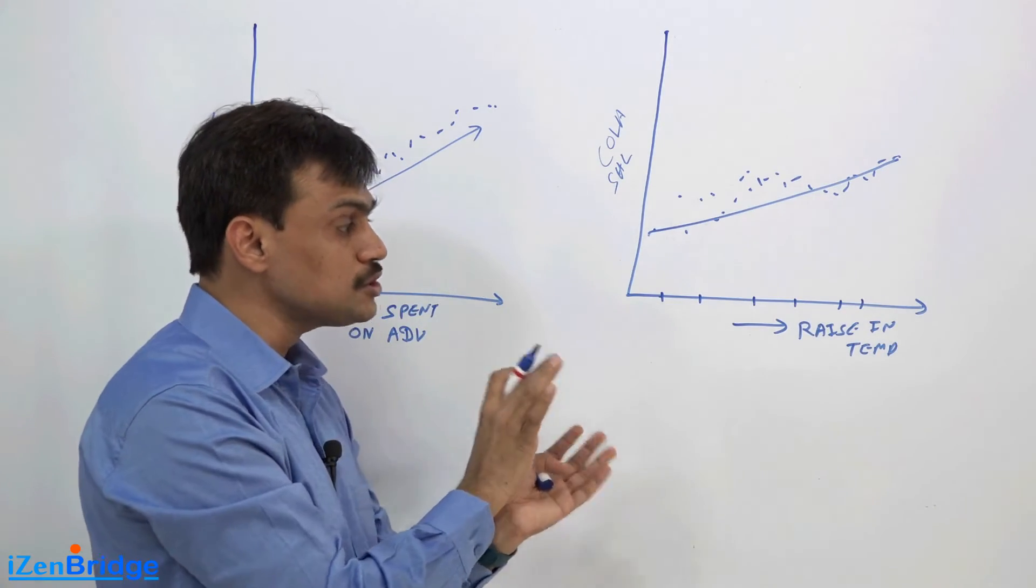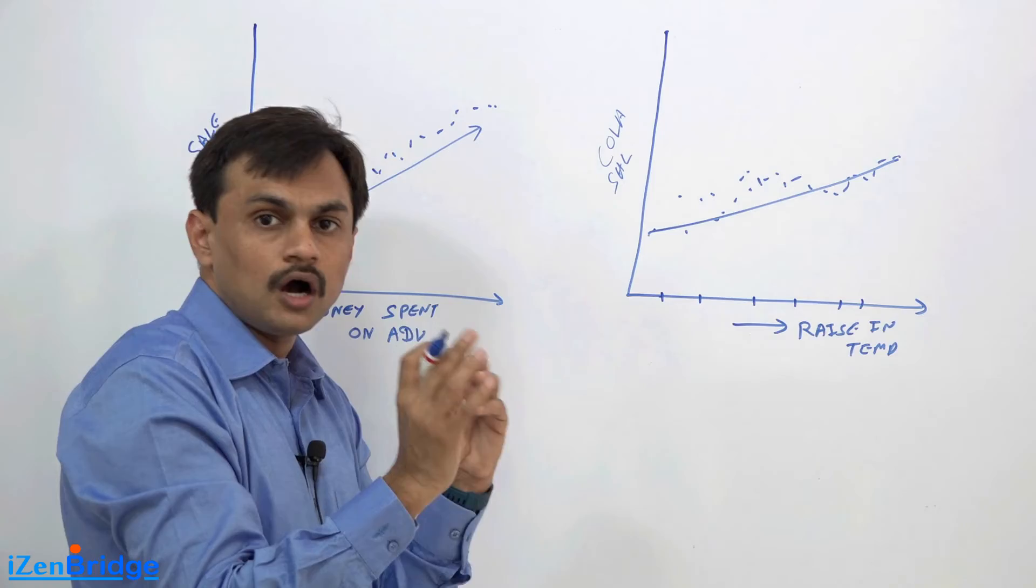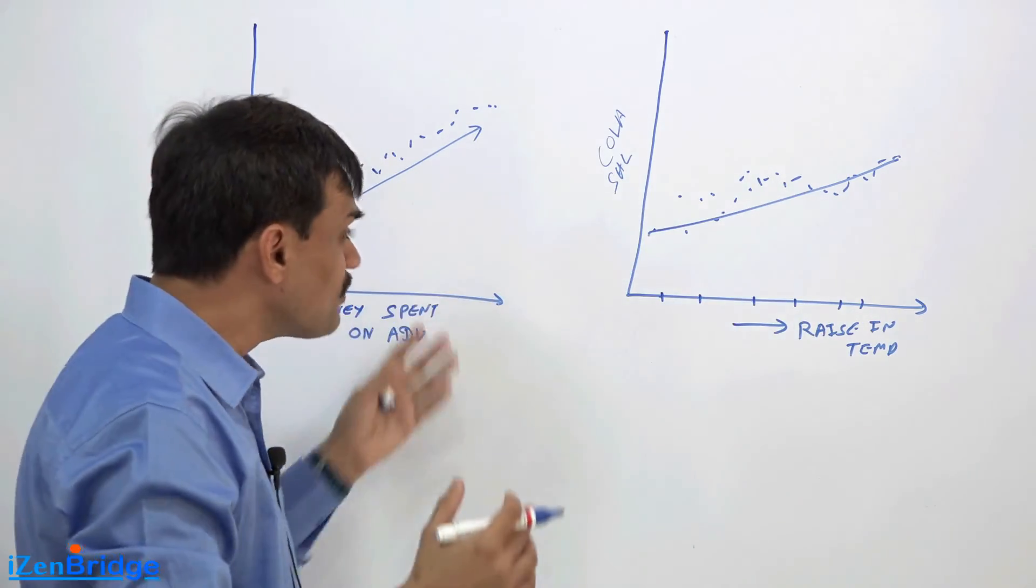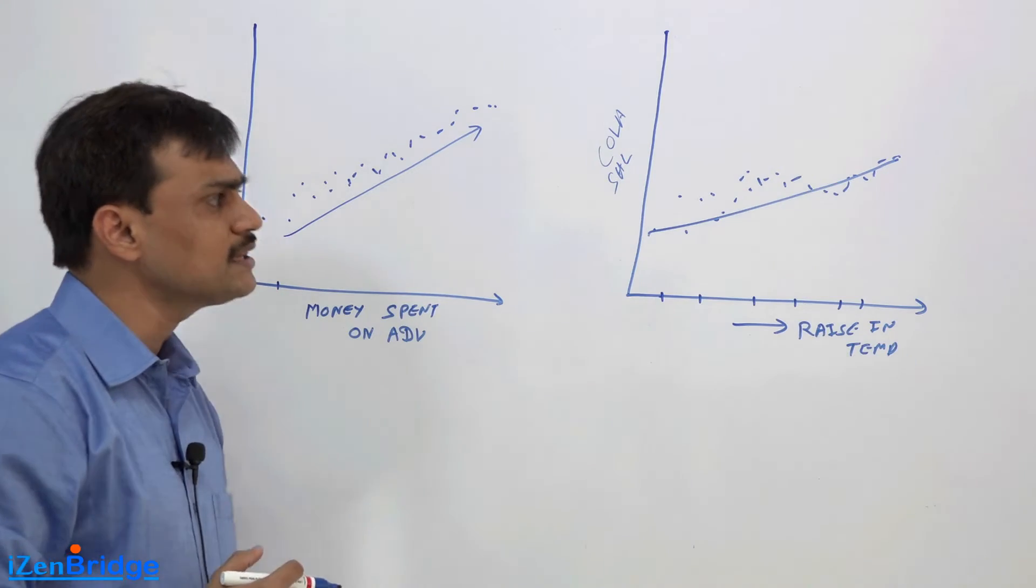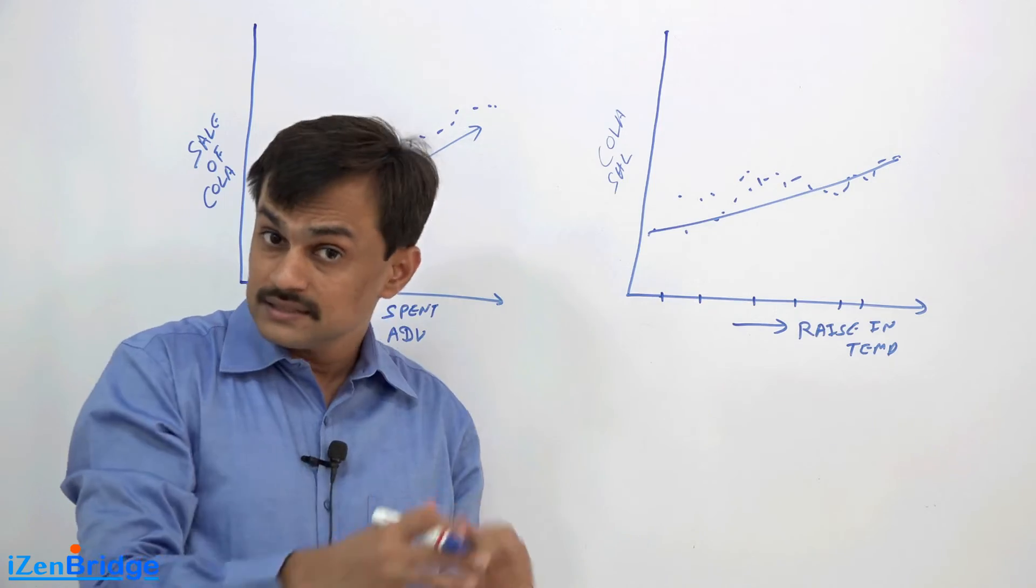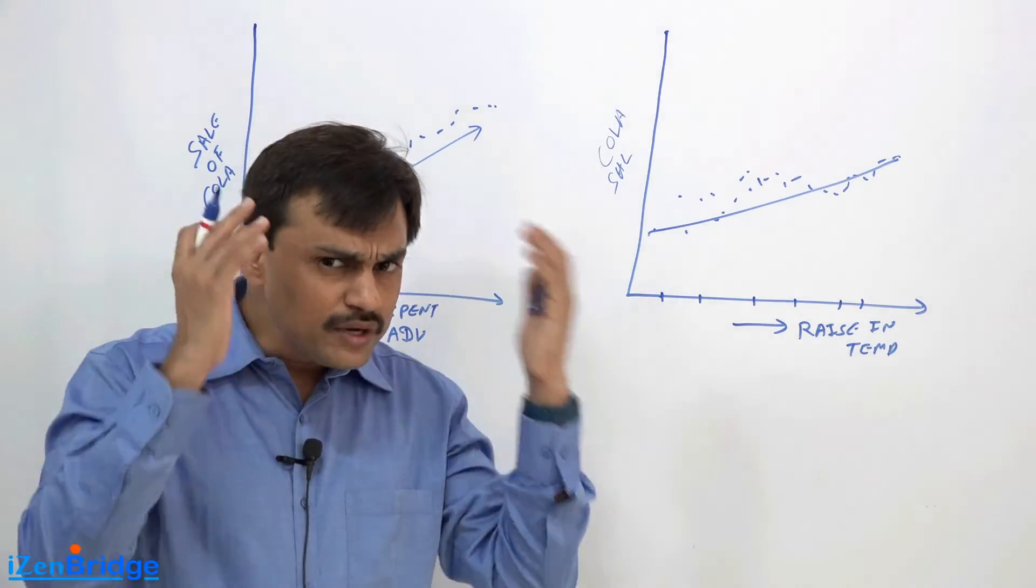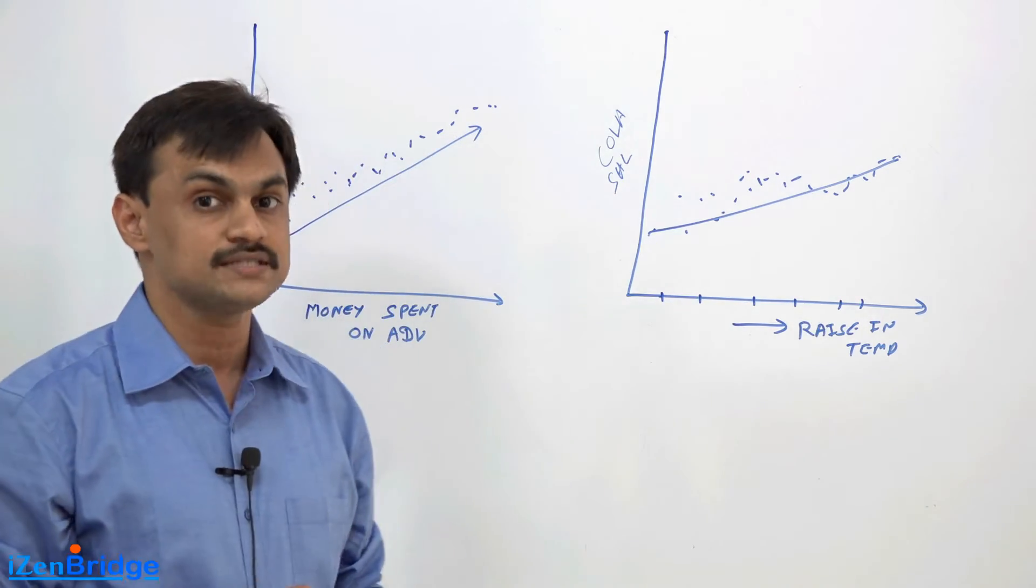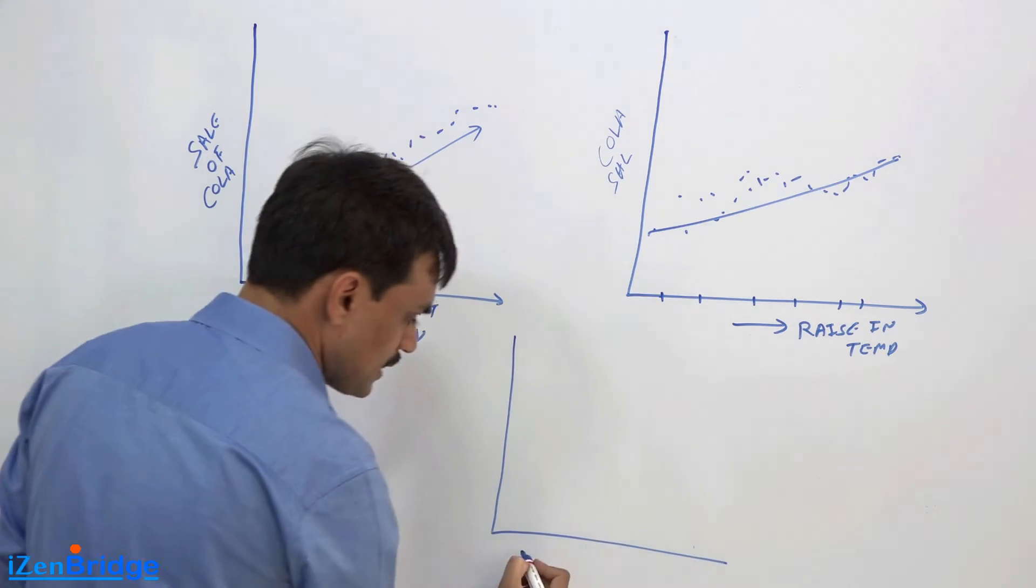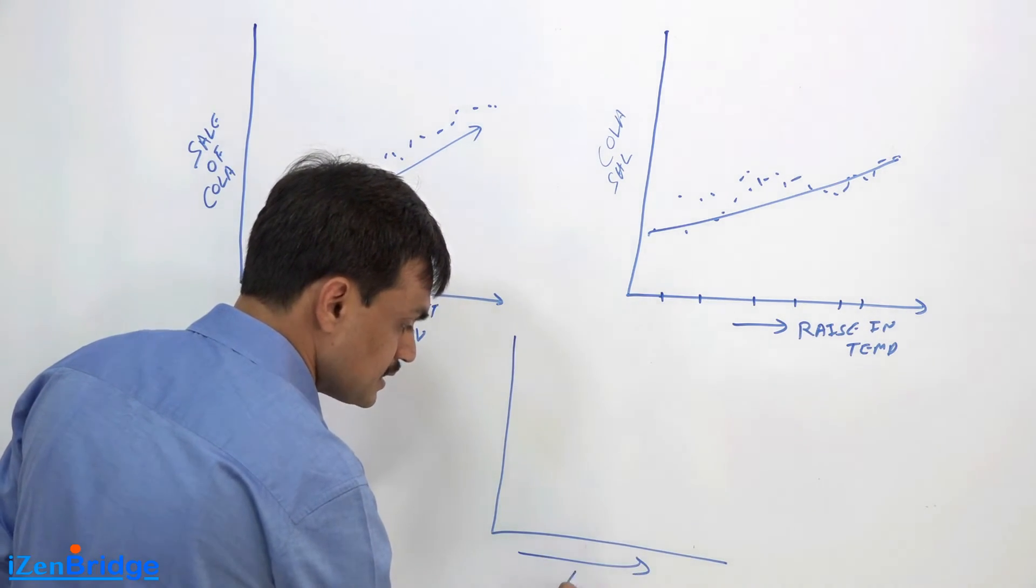You may also come up with a theory that looks like our sale is also getting impacted by the competitor's ad. That's the theory you have in mind. Now you somehow get the figure of competitor's ad spending and you plot this, and you see that ad spending of competitor is increasing here and your cola sale is here.